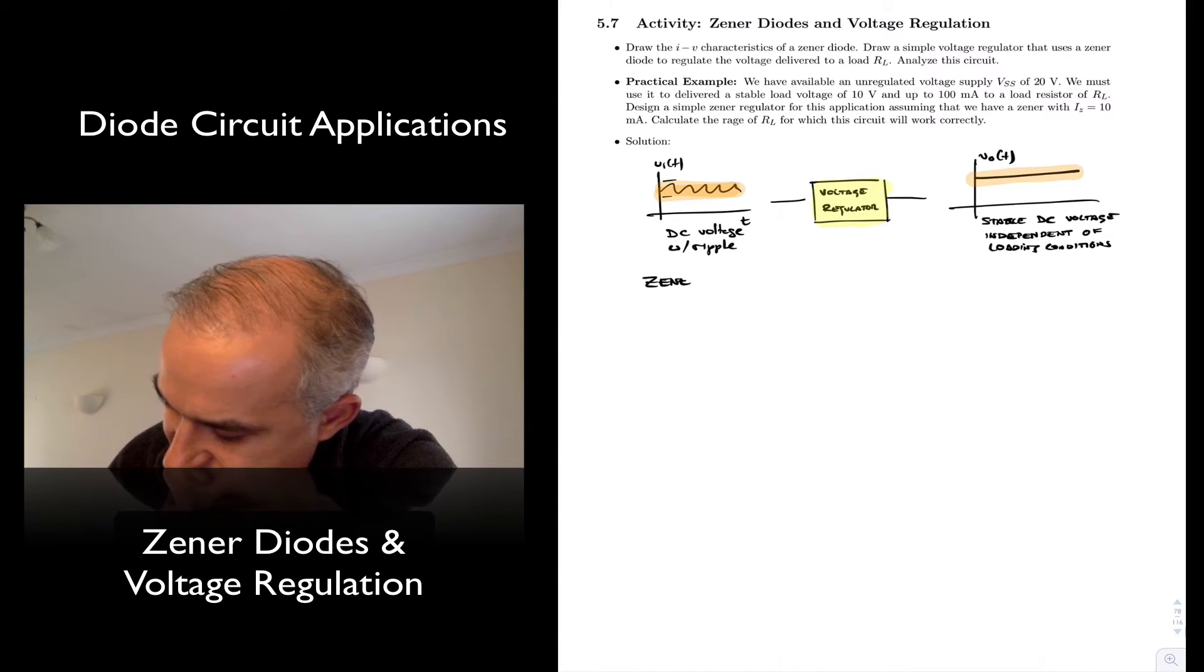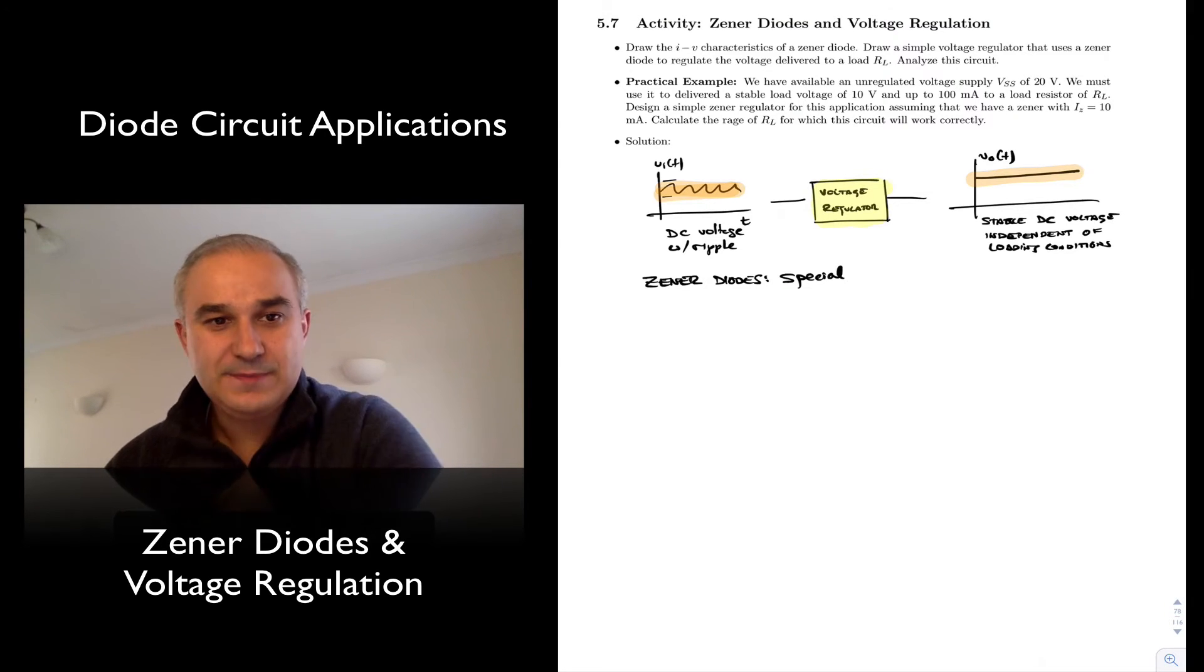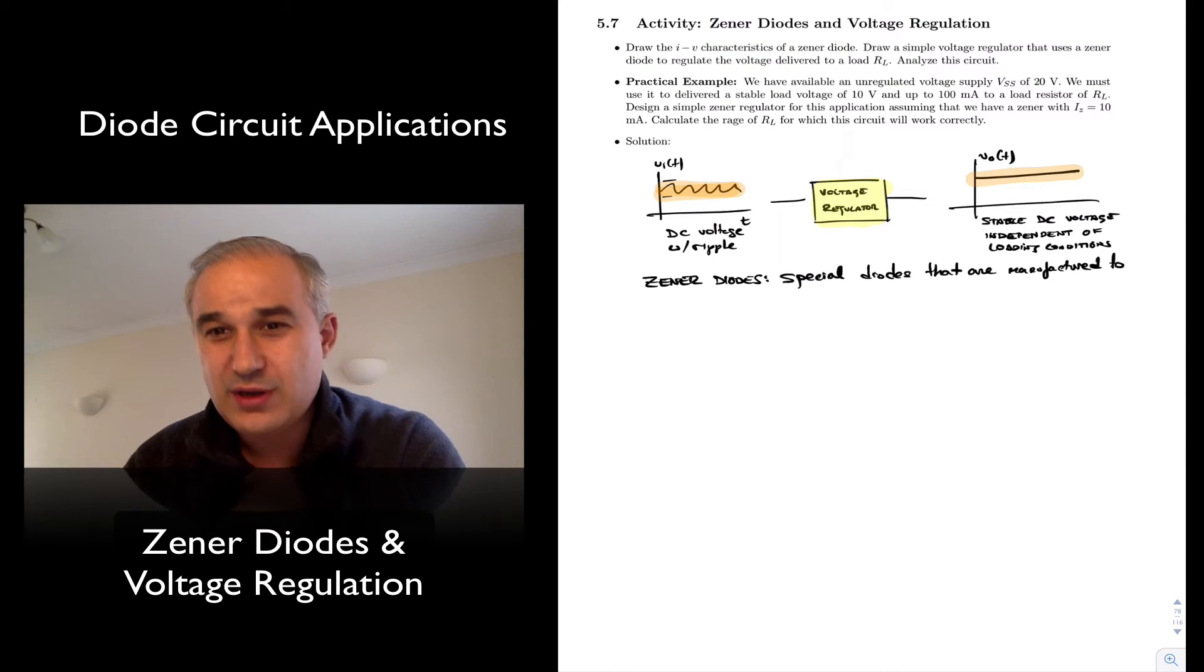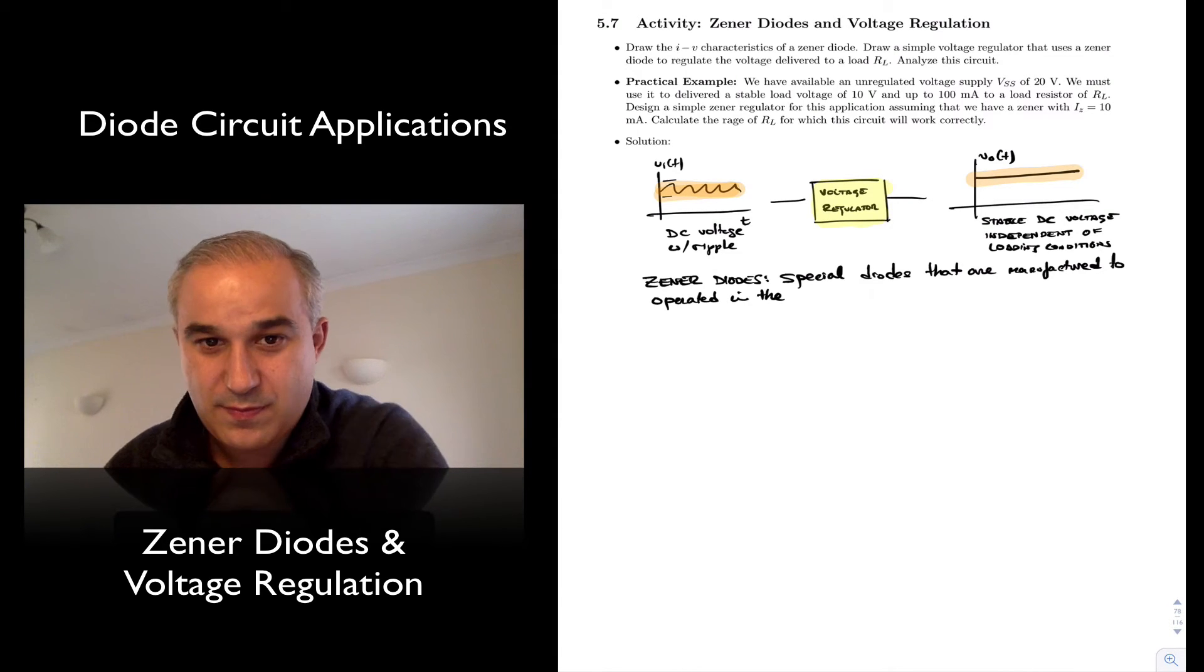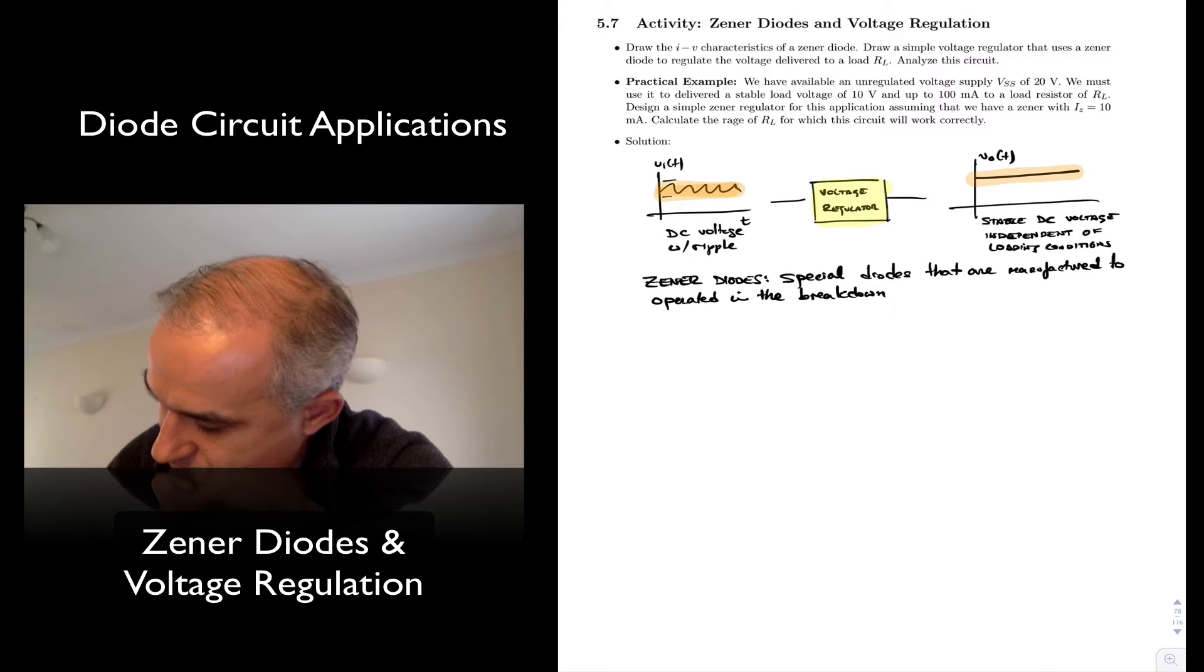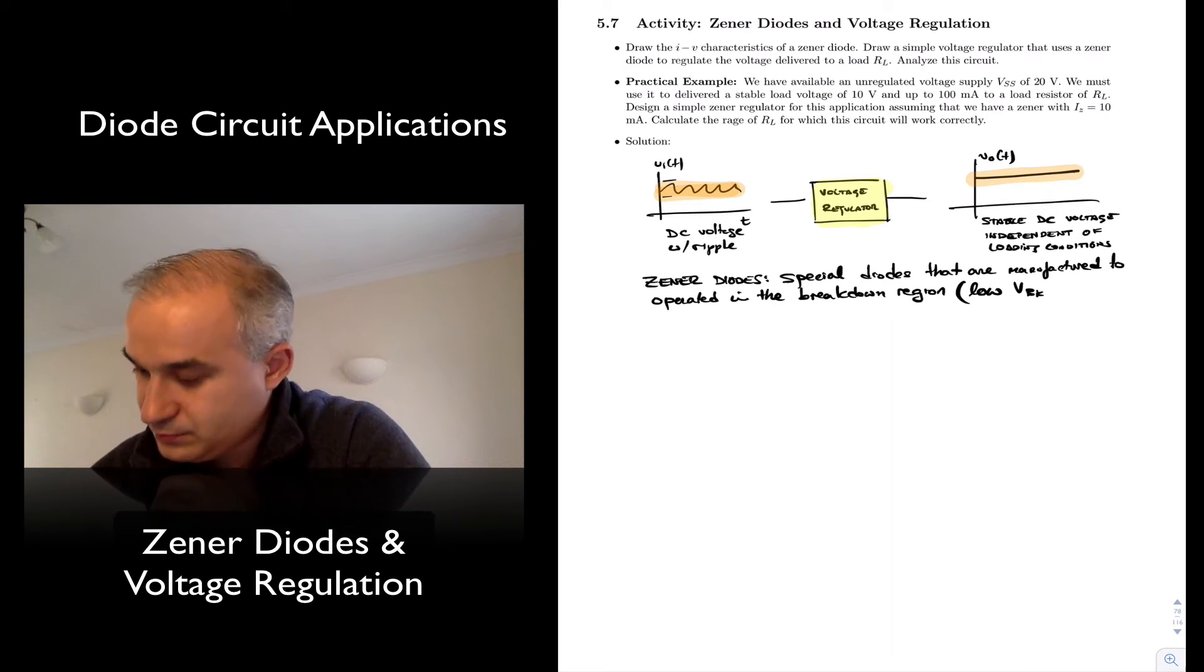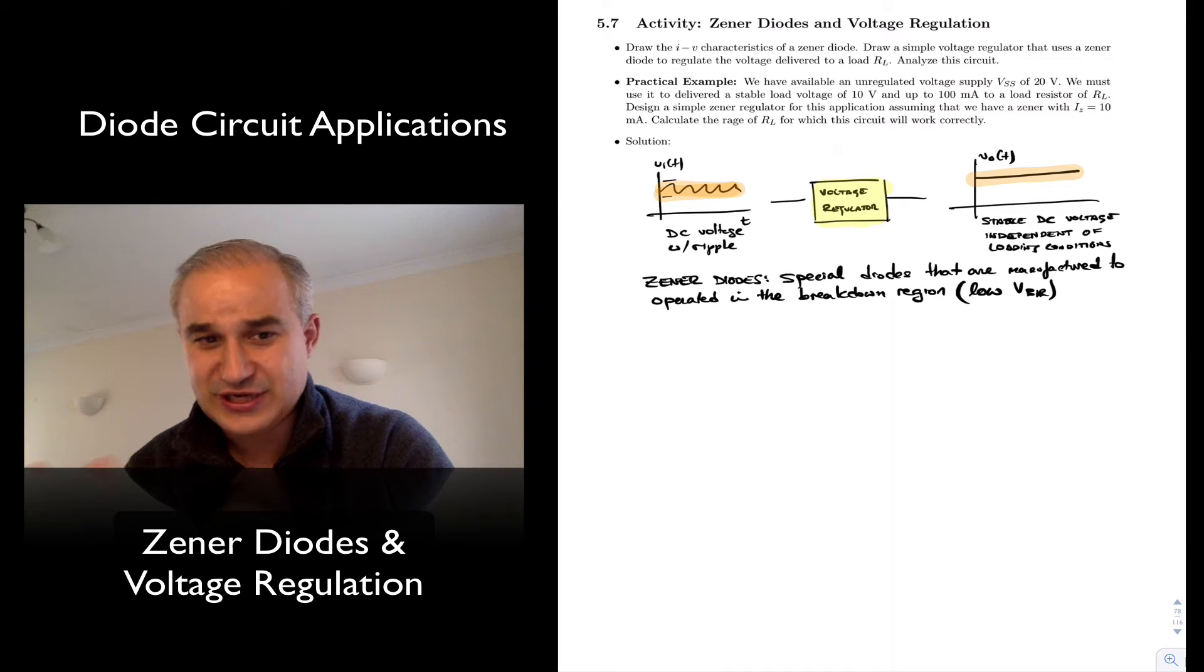So let's go over the Zener diodes. Zener diodes are special diodes that are manufactured to operate in the breakdown region at low breakdown voltages. And the stiffness of the curve in the breakdown region makes them suitable as voltage regulators since the voltage is constant for significant variations in current.